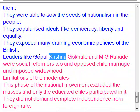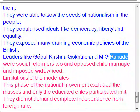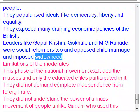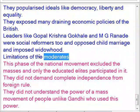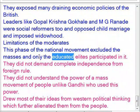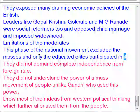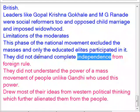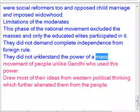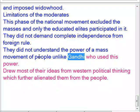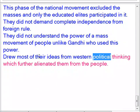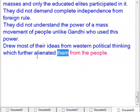Leaders like Gopal Krishna Gokhale and M.G. Ranade were social reformers too and opposed child marriage and imposed widowhood. The limitations of the moderates: this phase excluded the masses, and only educated elites participated. They did not demand complete independence from foreign rule, did not understand the power of a mass movement unlike Gandhi, and drew most of their ideas from Western political thinking, which further alienated them from the people.